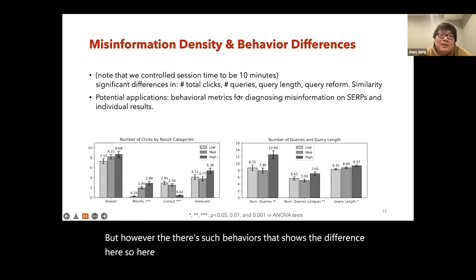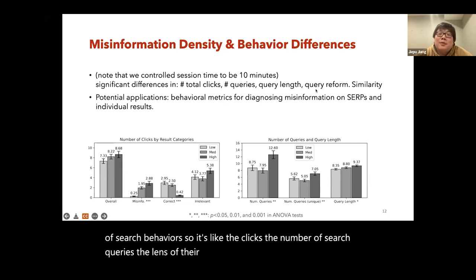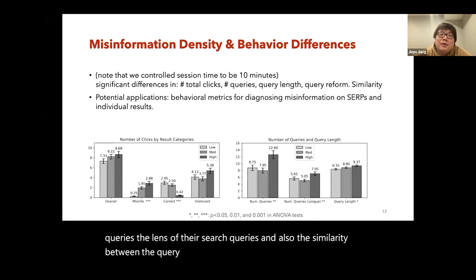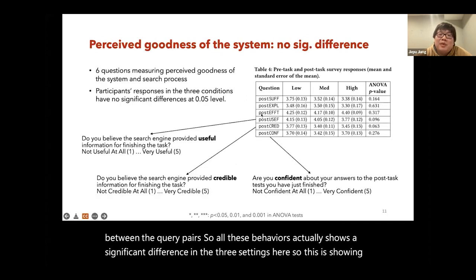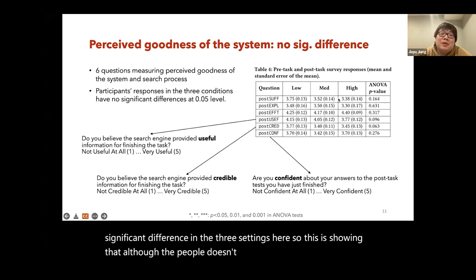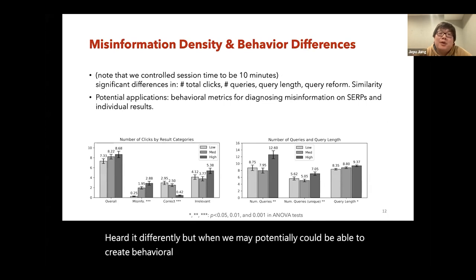However, search behaviors did show a difference. We tested many different types of search behaviors — clicks, number of search queries, length of search queries, and similarity between query pairs — and all these behaviors showed a significant difference across the three settings. This suggests that although people don't perceive the goodness of the system differently, we may potentially be able to create behavioral metrics to help us identify the misinformation density level.